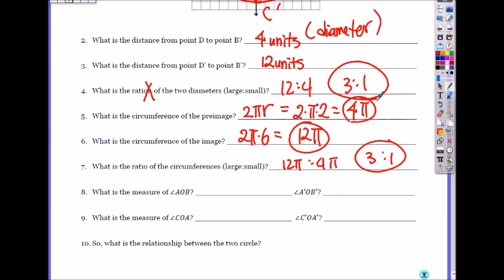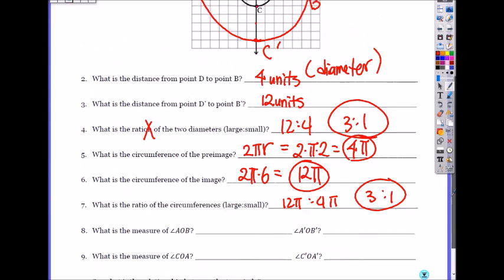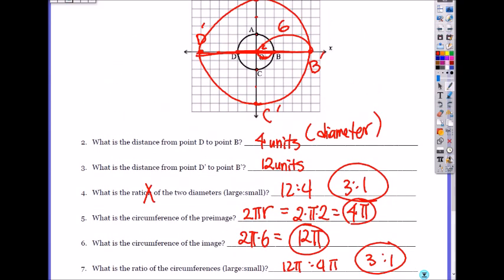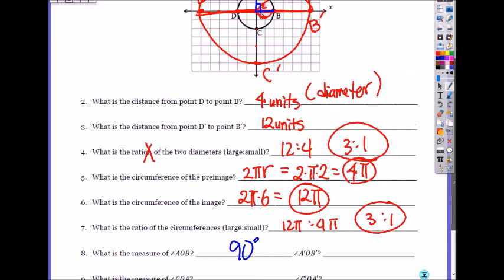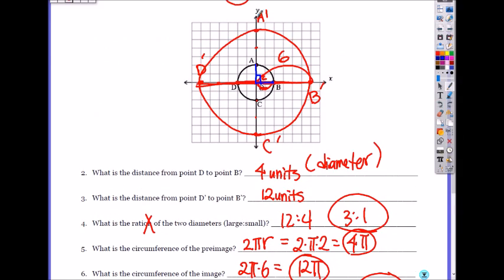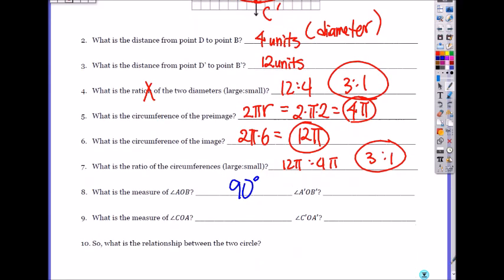So what is the measure of angle AOB? Angle AOB. What's the length? I mean measure of this angle. Right angle, it's 90. What about A prime, O, B prime? So from here to there, what angle is it? Still same angle, which is 90.